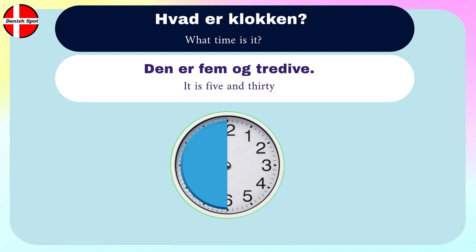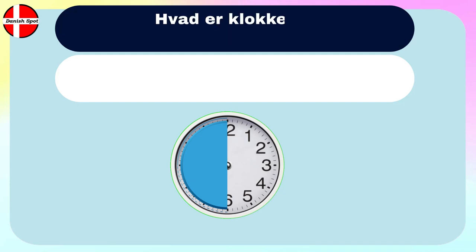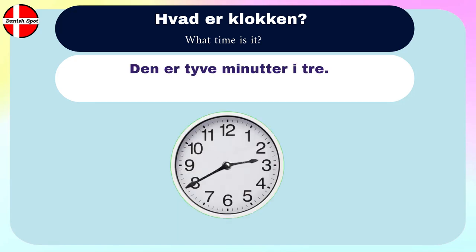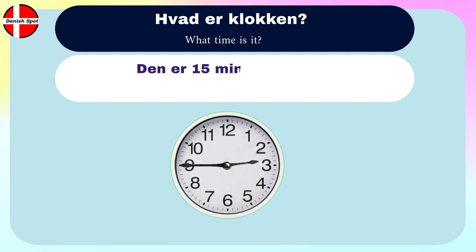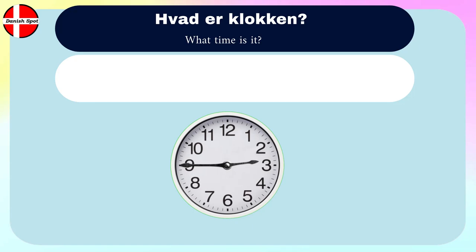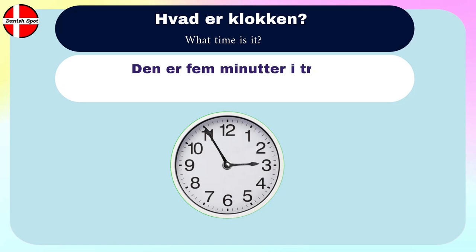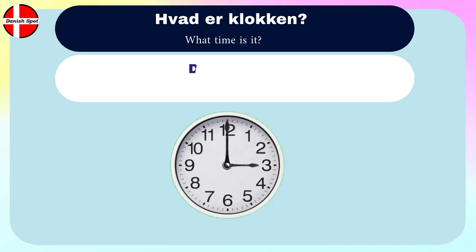Here are more examples for times when it's past the half hour mark. Hvad er klokken? — What time is it? Den er halv tre. It's half past two. Den er 20 minutter i tre. It's 20 minutes to three. Den er femten minutter i tre. It's 15 minutes to three. Den er et kvarter i tre. It's a quarter to three. Den er fem minutter i tre. It's five minutes to three. Den er tre. It's three o'clock.